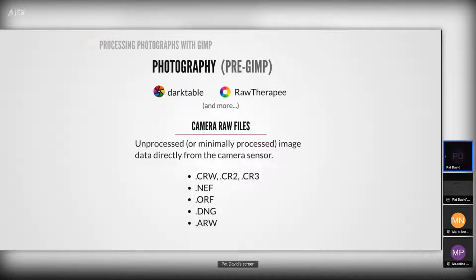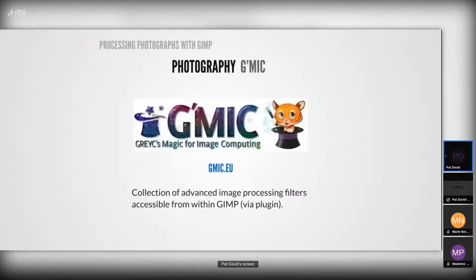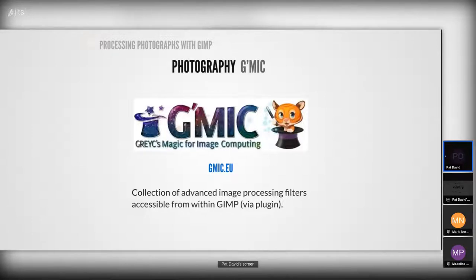Just be aware that when you start getting into photography as a hobby or profession, you'll be dealing with raw files, and the methods for processing images in a raw editor will be a bit different than what we'll see today in GIMP's raster editor. Another project I want to mention is from my good friend David Tschumperlé — G'MIC, which stands for GREYC's Magic for Image Computing. It's available as a plug-in for GIMP and Krita, and it's a collection of advanced image processing filters written by David and others in the community.